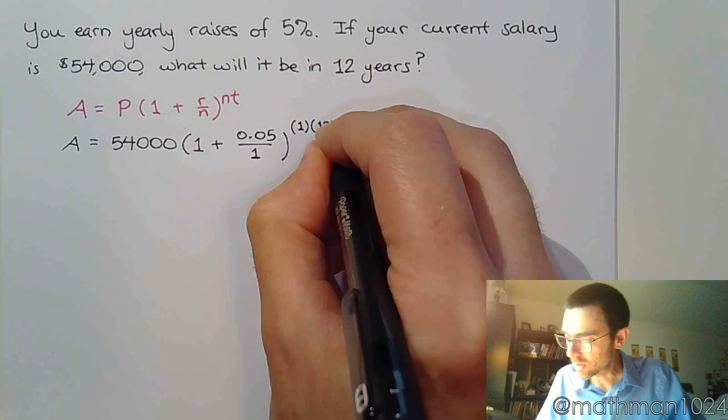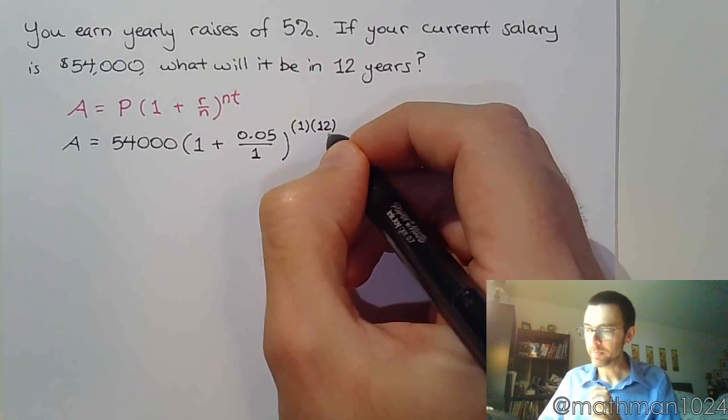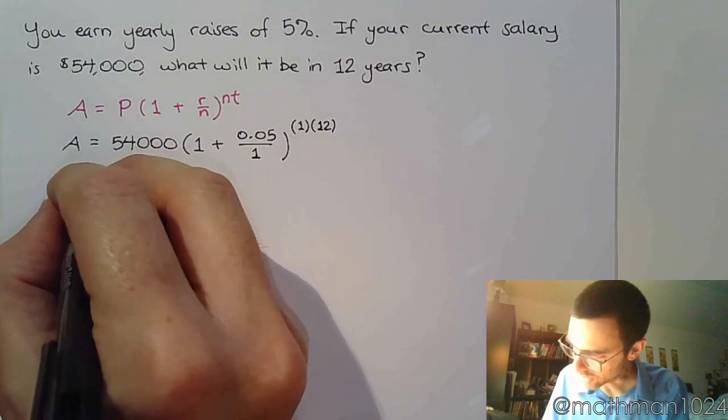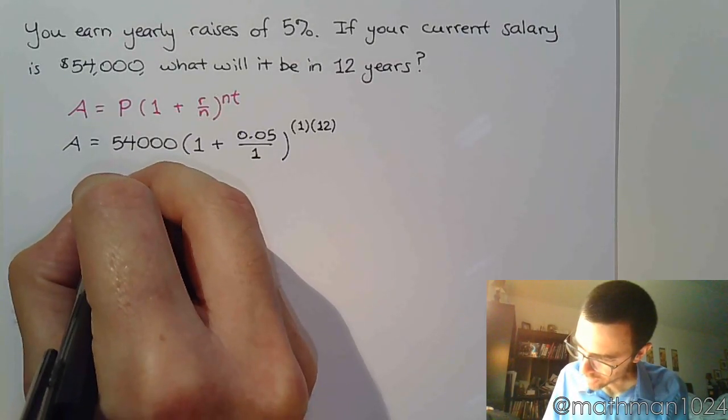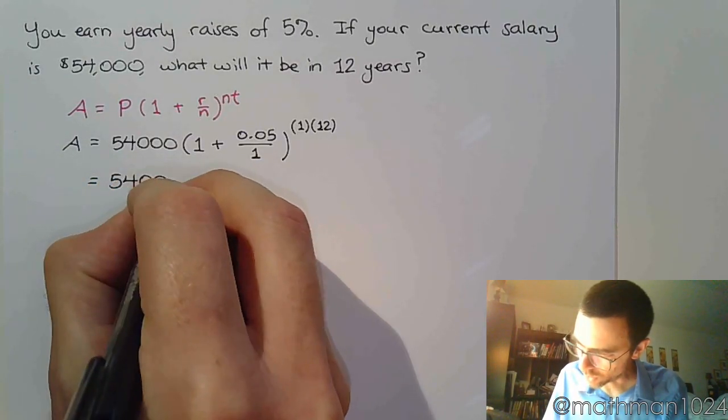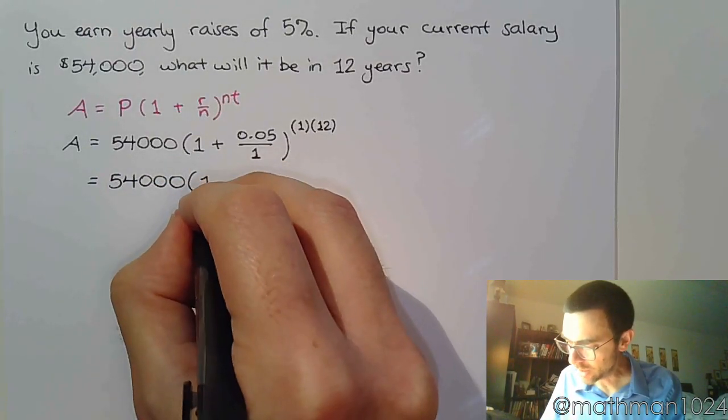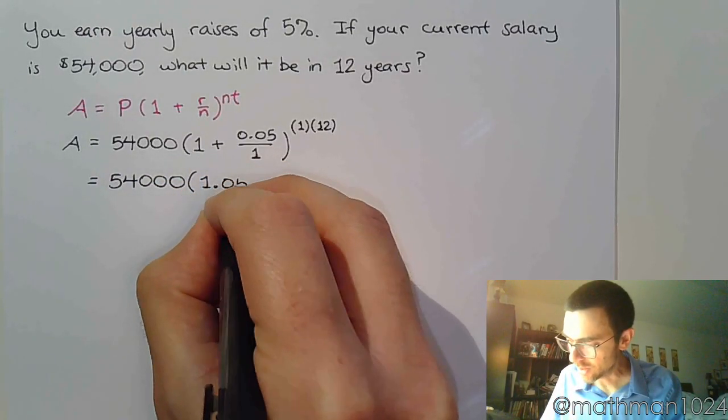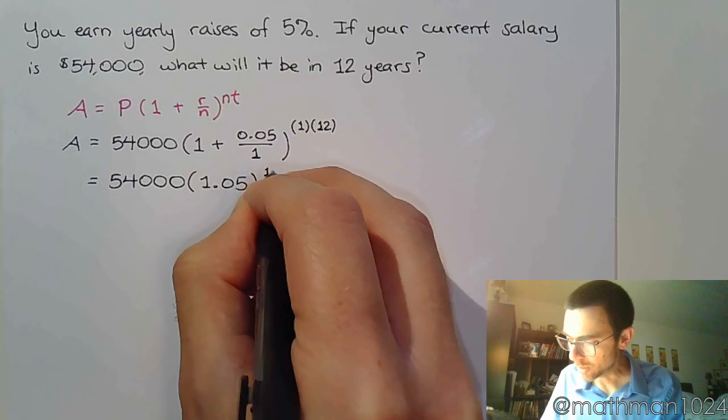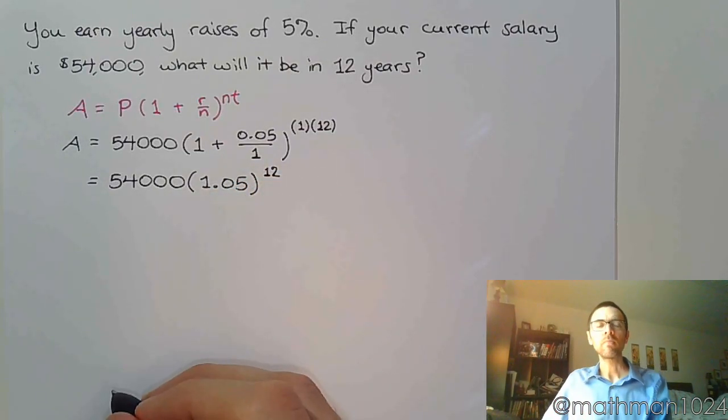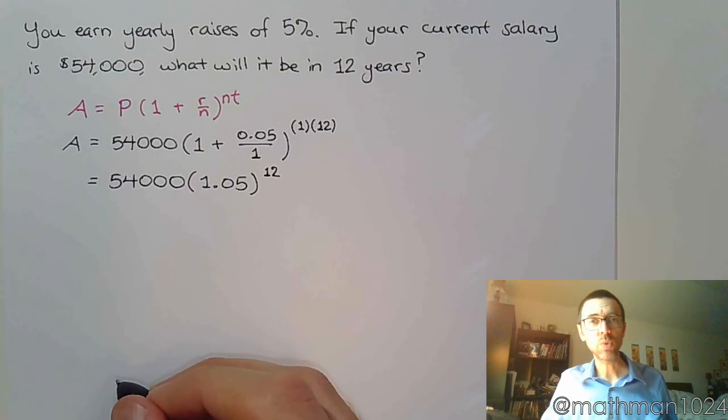When you simplify this, I want to point this out to you again how it works in the real world. If I simplify this, I get 1.05, and then 1 times 12 is of course 12.